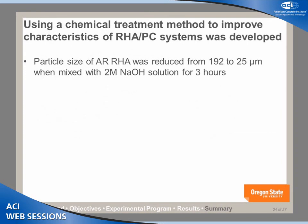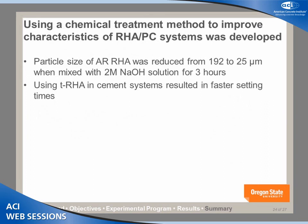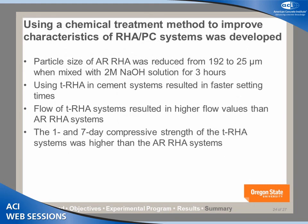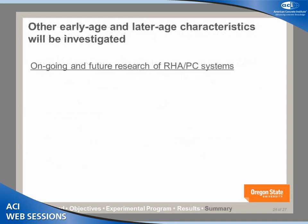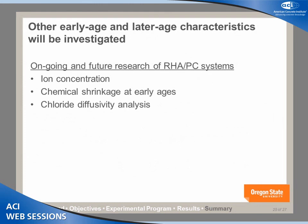In summary: particle size can be reduced to 25 microns by mixing with 2 molar sodium hydroxide for three hours. T-RHA shows faster setting time and better flowability compared to AR-RHA. One-day and seven-day compressive strength is improved, and porosity is reduced due to better particle packing. For future research, we plan to investigate the ion concentration of hydroxyl calcium and aluminate at early age, chemical shrinkage, and long-term performance such as chloride diffusivity and microstructure of Portland cement and RHA together. This will be presented at ICMT in Japan in August.